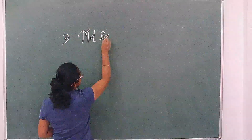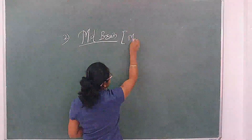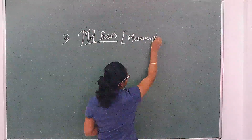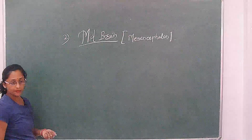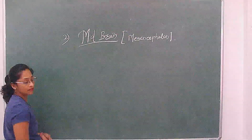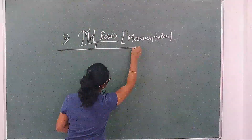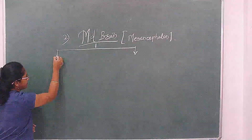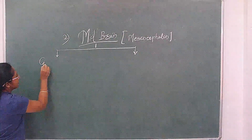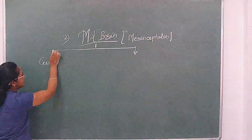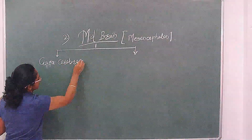The part of the brain called the midbrain is also called as mesencephalon. We divide the midbrain into two parts: crura cerebri and corpora quadrigemina.